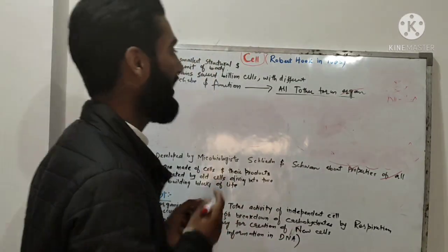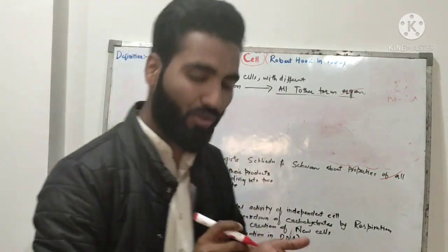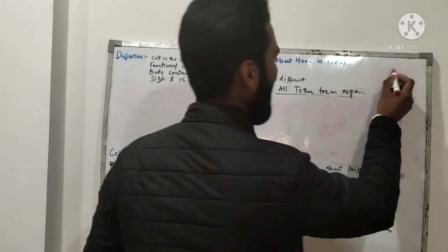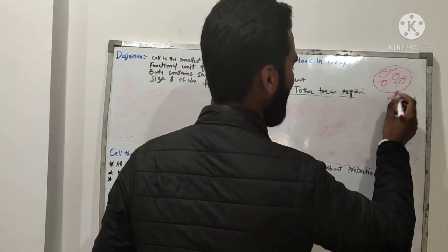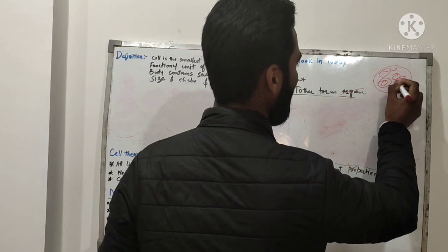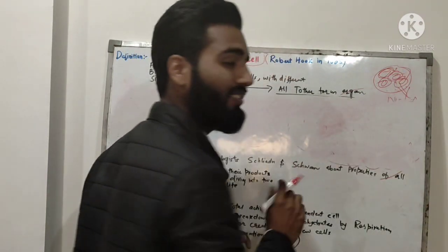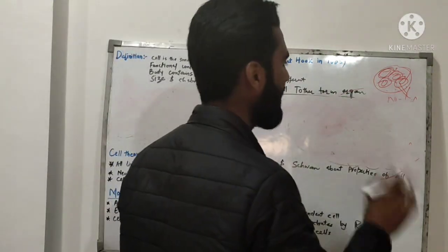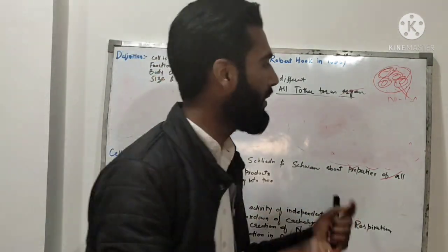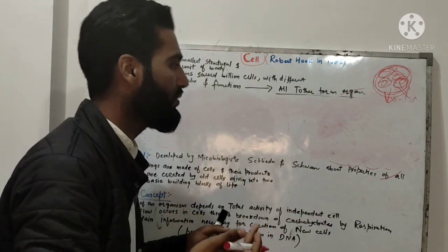Cell was discovered by Robert Hooke in 1665. The discovery was made through a plant experiment using a microscope. Initially the cell was not seen as living — it was not living. Then, with a highly magnified microscope, it was observed that the inside of the cell was moving, and so they said that the cell is living.